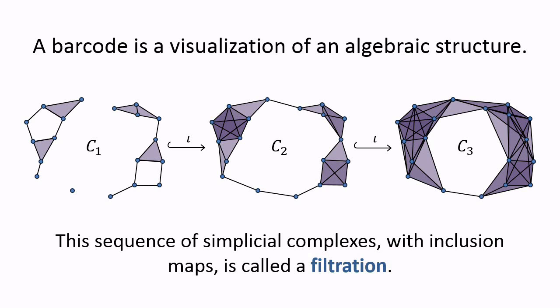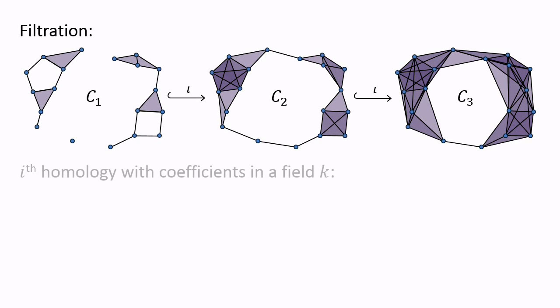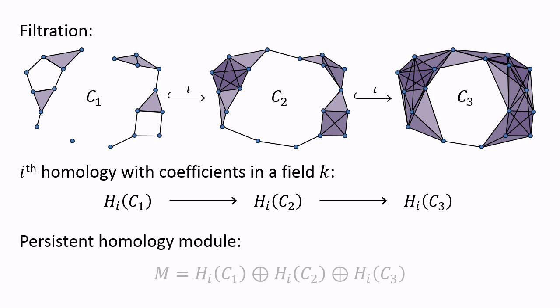When we apply homology to a filtration, we obtain an algebraic structure called a persistence module. Suppose we want to compute ith homology with coefficients from a field k. The homology of any complex Cj is a vector space, and the inclusion maps between complexes induce linear maps between homology vector spaces.